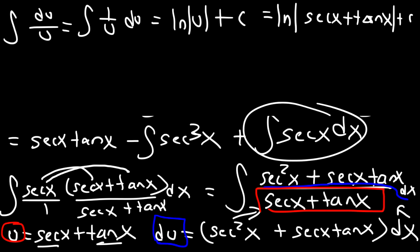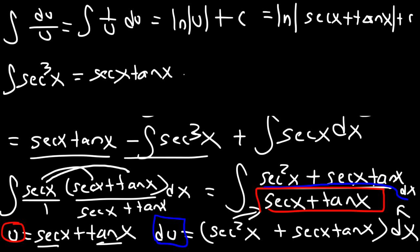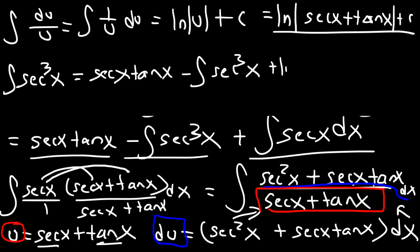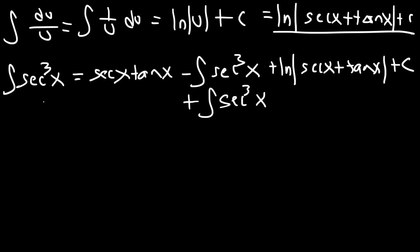That covers the integral of secant. Let's rewrite what we have. Our original problem is the integral of secant cubed, and so far that equals secant x tangent x minus the integral of secant cubed, plus natural log of secant x plus tangent x plus c. We're going to add the integral of secant cubed to both sides of the equation.